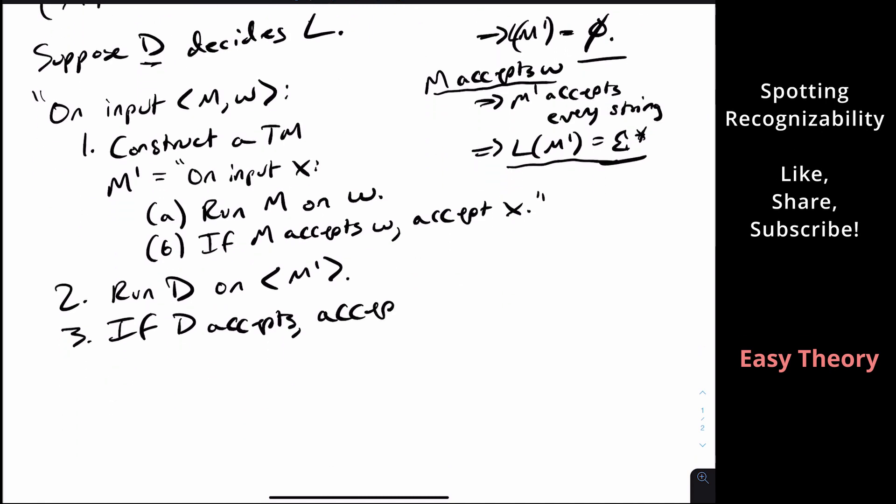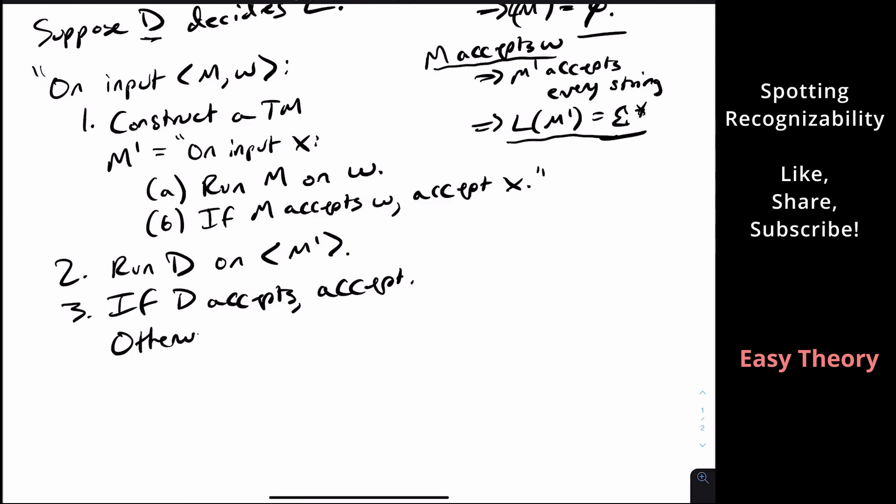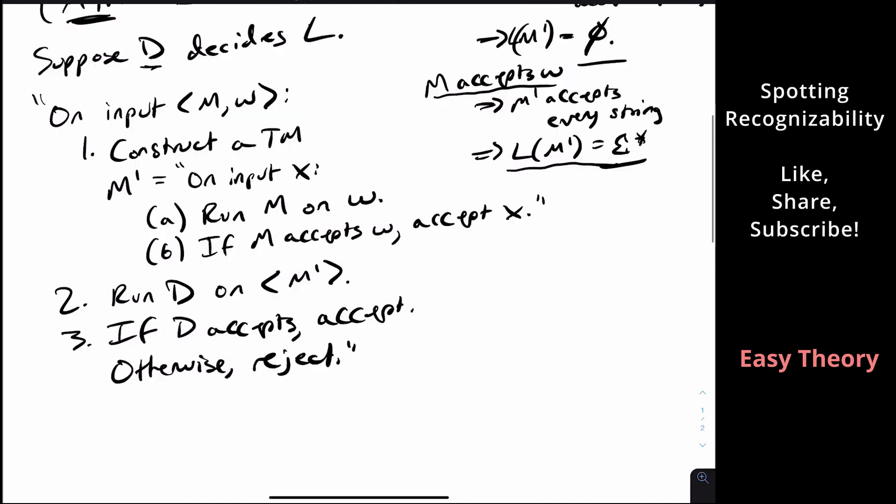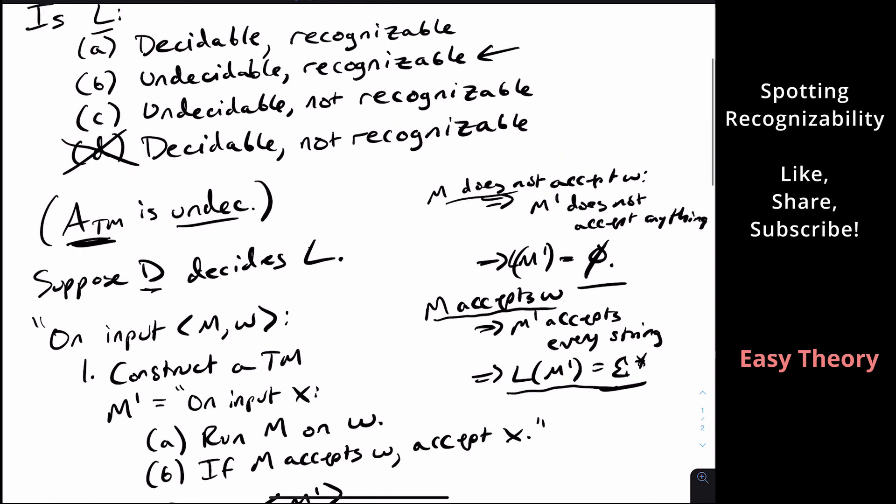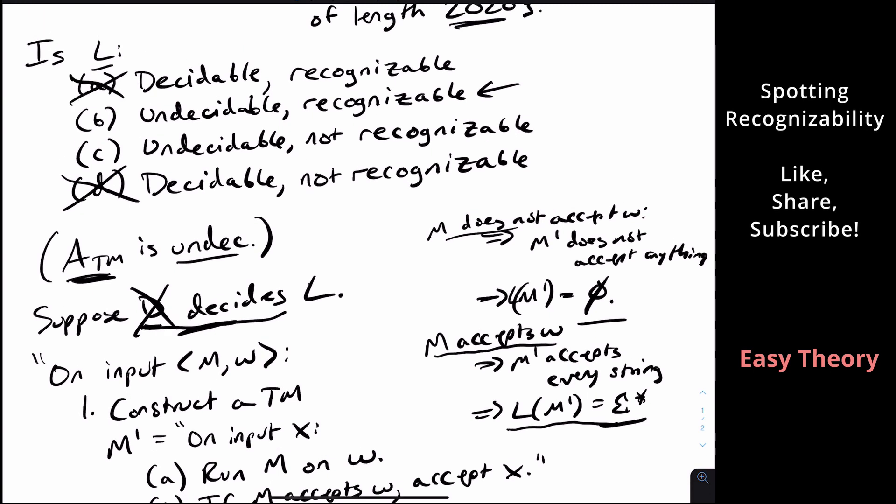It accepts every string, which means M accepts W. So that means we need to accept in this case, because we're trying to solve the ATM problem. And then otherwise, we're in the other case, which means we reject. Well, since ATM is undecidable, there's no possibility for this decider D to exist. So it can't be answer A, therefore, because we found out it's undecidable.